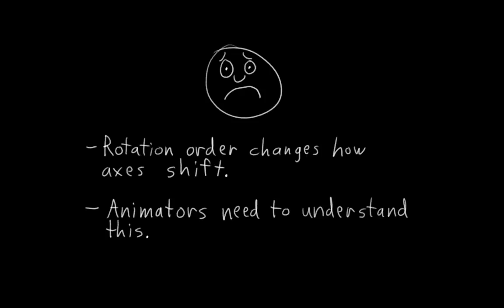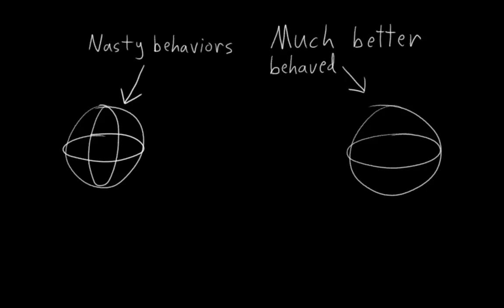A couple of final notes about Eulers. First, if you have one of the axes locked, so that you're only rotating on two of the axes, then Eulers are much better behaved. A lot of the nasty behaviors of Euler rotations, such as Gimbal Lock, come from rotating on all three axes. So if you only need to rotate on two axes, simply lock one of the axes, and a lot of Euler's rotation problems will disappear.